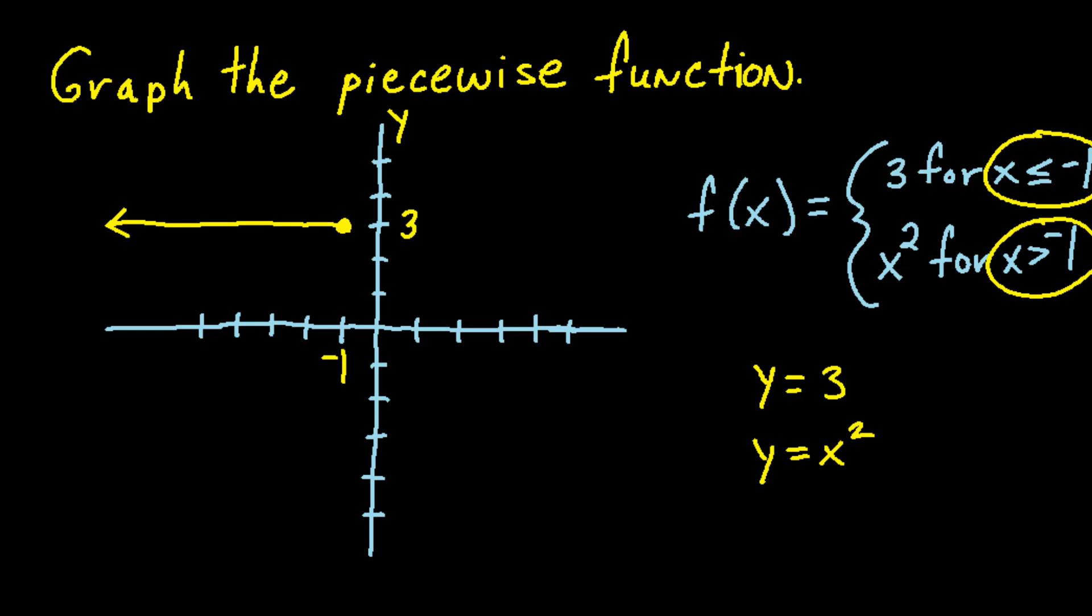The second equation is y equals x squared. If we solve for a couple points on this parabola, say x equals negative 1, 0, and 1, we will get a good feel for this function. Since y equals x squared, when x is negative 1, we will have negative 1 squared, which equals positive 1, and 0 squared, which equals 0, and 1 squared, which equals 1. We could also solve for the point where x equals 2, and we would get 2 squared, which equals 4. Now all of the right side of this parabola will be on our graph, and a little bit of the left side as well.